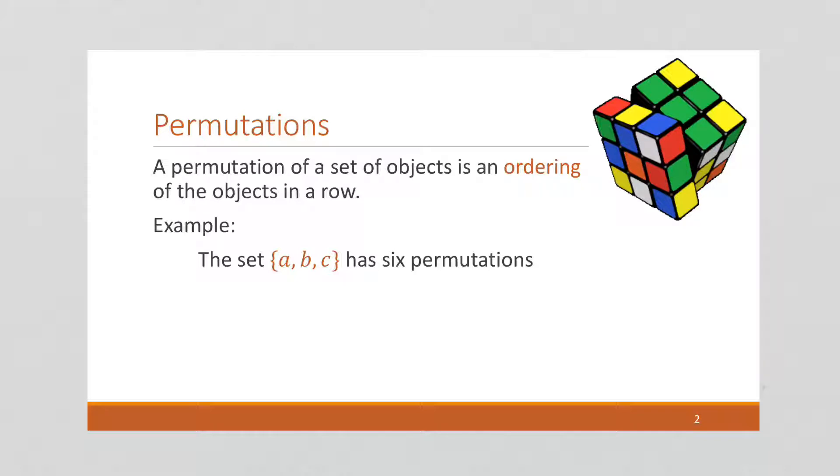So for example, if we have a set that contains A, B, and C, there are going to be six permutations. Let's work them out.